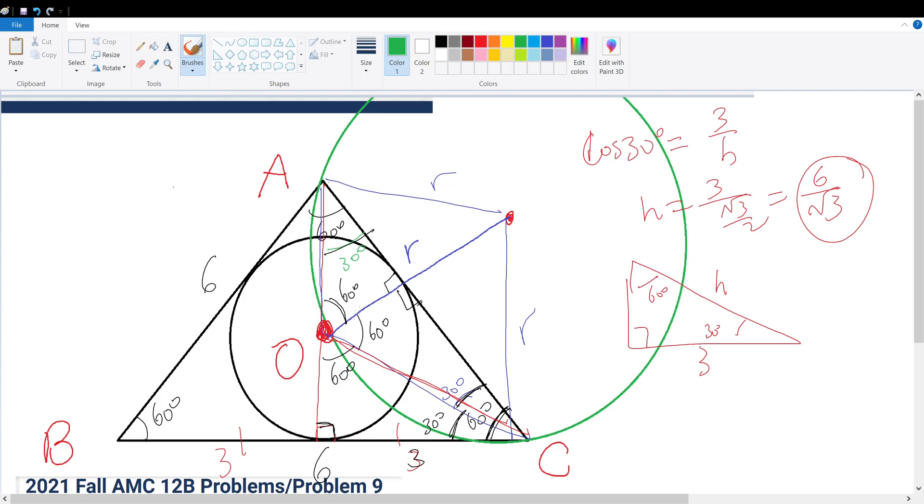We're also given that this is an isosceles triangle because this is radius R. If we draw this over here, that's radius R again. But this is 60 degrees, and in an isosceles triangle, that means this must be 60 degrees right here.